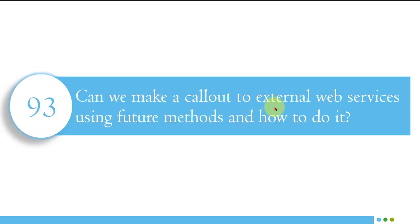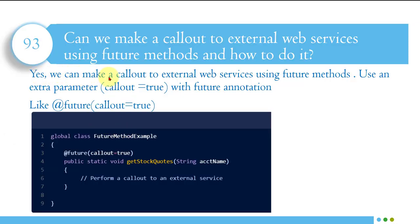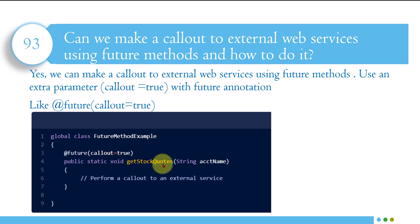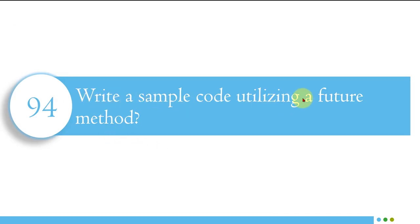Can we make a callout to an external web service using a future method, and how do we do it? Yes, we can. To enable this, add the callout=true parameter to the @future annotation — so it becomes @future(callout=true). This allows the future method to call an external web service.